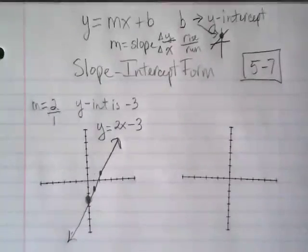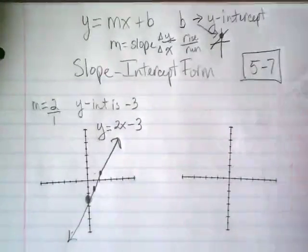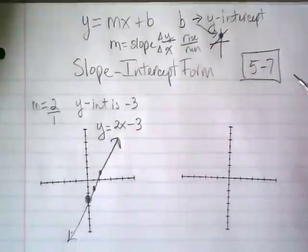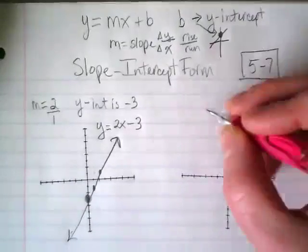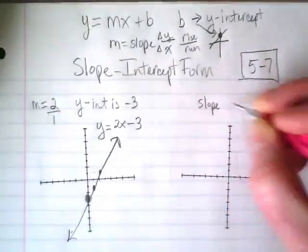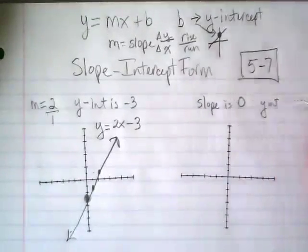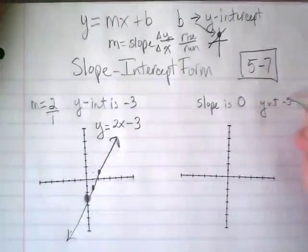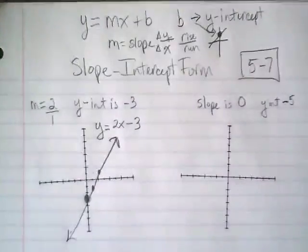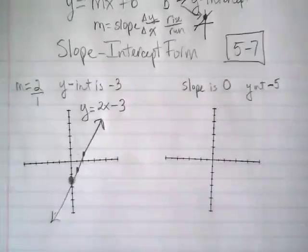Okay. I would like you guys to write down on this one, our slope is 0 and our y-intercept is negative 5. And try to graph it.